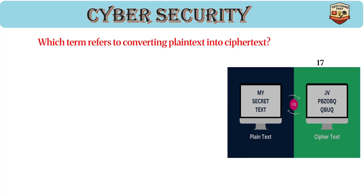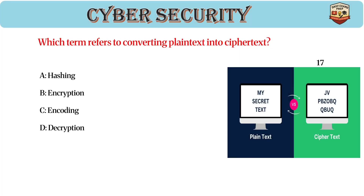Which term refers to converting plain text into ciphertext? Answer: B, encryption. Encryption transforms plain text into an unreadable form, requires a key for decryption, and ensures the confidentiality of data.